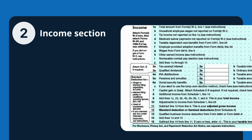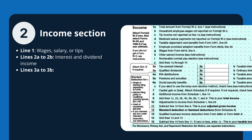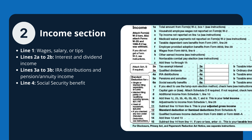Now let's dive into the income section. Line 1 is for your wages, salary, or tips. Lines 2A to 2B cover interest and dividend income. Lines 3A to 3B are for IRA distributions and pension annuity income, and line 4 is for social security benefits, if applicable.